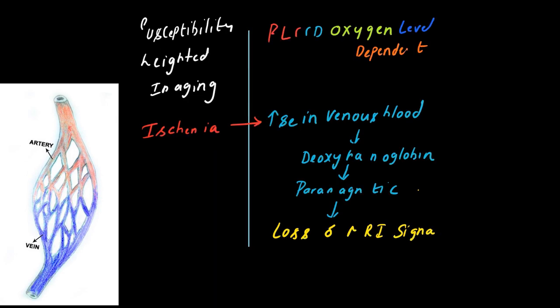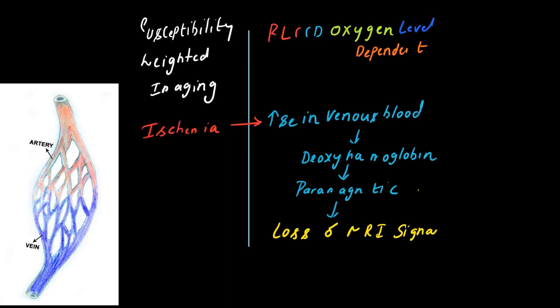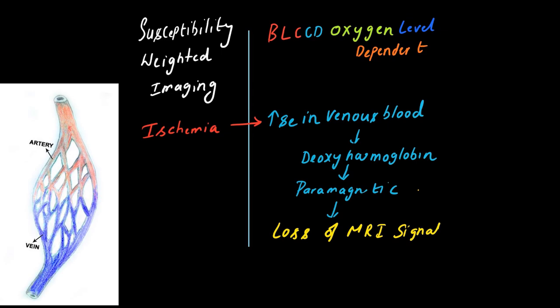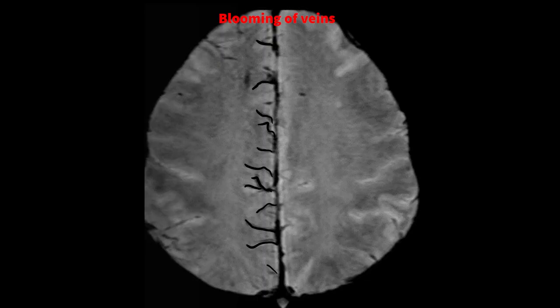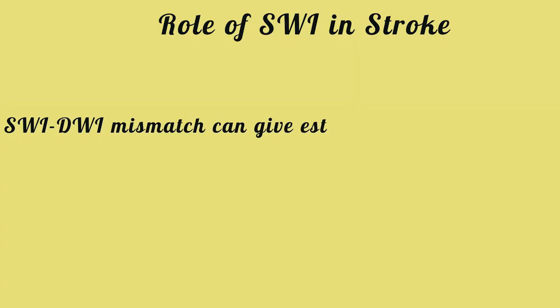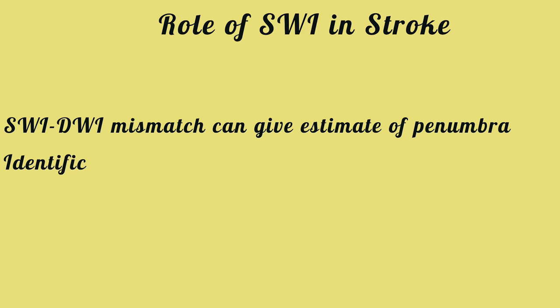Susceptibility weighted imaging, originally called blood oxygen level dependent imaging, is an MRI sequence that is very sensitive to venous blood, hemorrhage, and iron. Ischemia results in an increase in venous blood, which results in deoxyhemoglobin, which causes paramagnetic effects and loss of MRI signal. This results in blooming of the venous structures, as seen in this MR image.